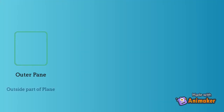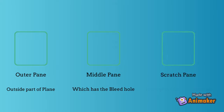The cabin windows of the airplane consist of three panes. The one which forms part of the fuselage is called the outer pane. Then comes the middle pane, which is called the inner pane — this is the pane where we find the bleed hole. Then comes the scratch pane, which is in the interior of the plane and the one which we can touch.